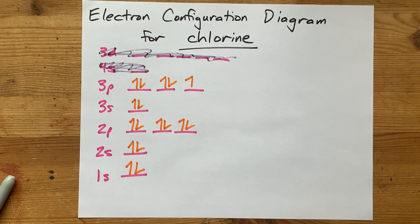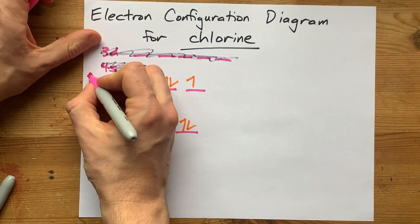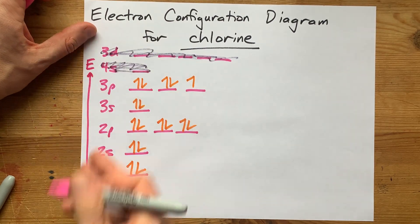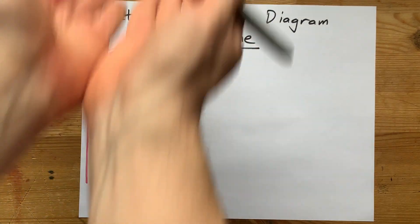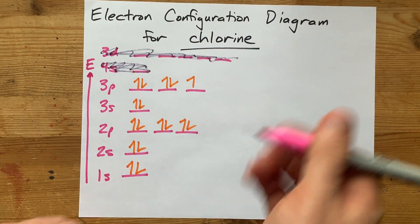There's your electron configuration diagram for chlorine. Some teachers want you to include a little axis here that shows that you know it's energy and that these ones are like the higher you go, the higher energy it is. But hey, there you go.